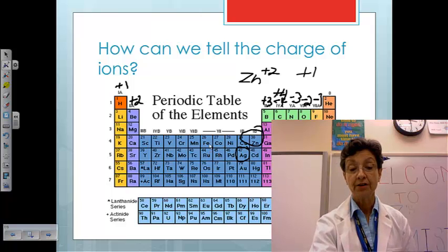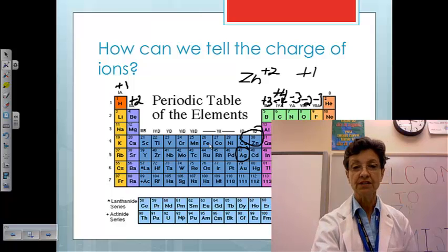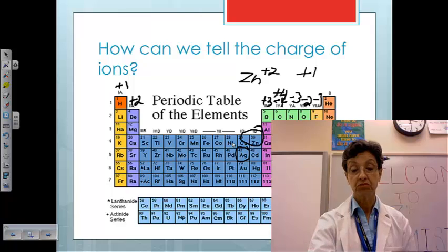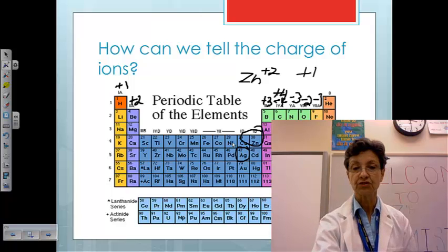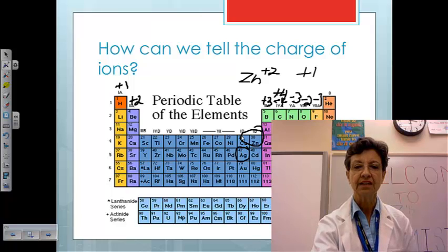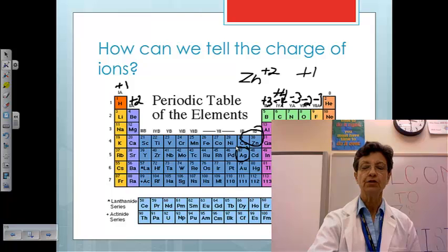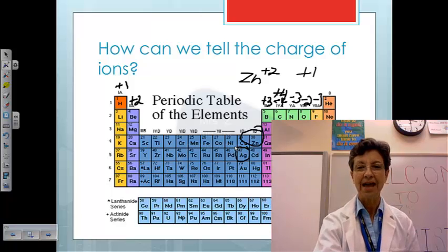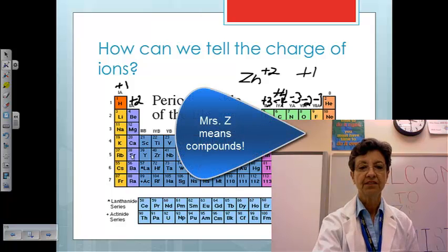For example, iron could lose two or three electrons, depending. Nickel could lose two electrons or three electrons. But there are a few that are fixed. We're not going to worry about these today, because we're going to talk about nomenclature of these simple atoms that form from these elements and these elements.